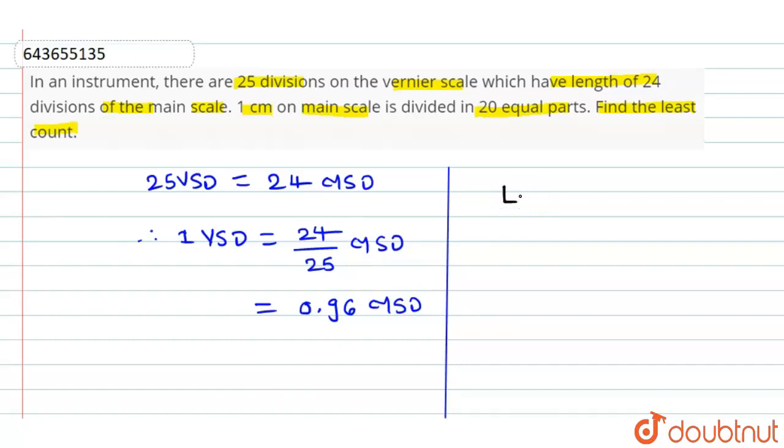Now, the value of least count will be calculated by the formula: 1 main scale division minus 1 vernier scale division. Now, 1 VSD, 1 vernier scale division equals to 0.96 MSD, so 1 minus 0.96 MSD.